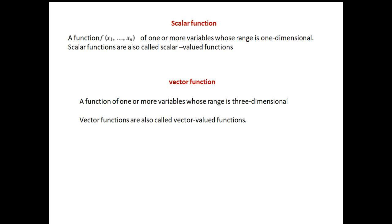Vector function is of one or more variables whose range is three dimensional. Now scalar quantity and a scalar function are two different things like mass, temperature etc is a scalar quantity. Whereas scalar function is a vector function, there can be more than one variables but they change in only one dimensional. Their change is only one dimensional.